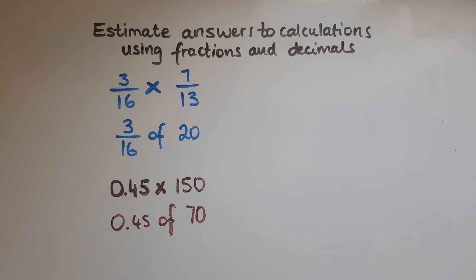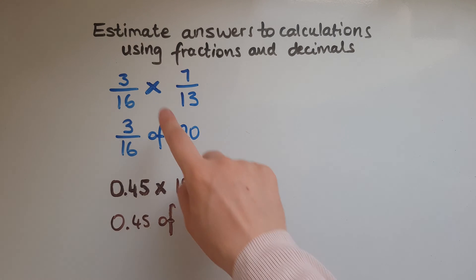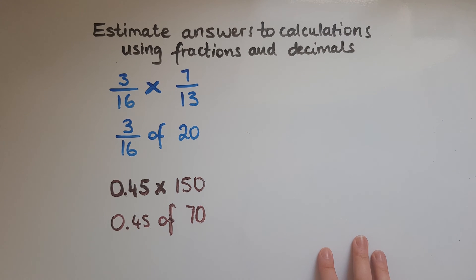So looking at the first question, I've got 3/16 times 7/13. Now if I just went on and multiplied the top numbers and the bottom numbers as they are, I'd get the answer wrong because I'd get the actual answer and I'm looking for an estimate. So it's an estimated answer that I'm after.